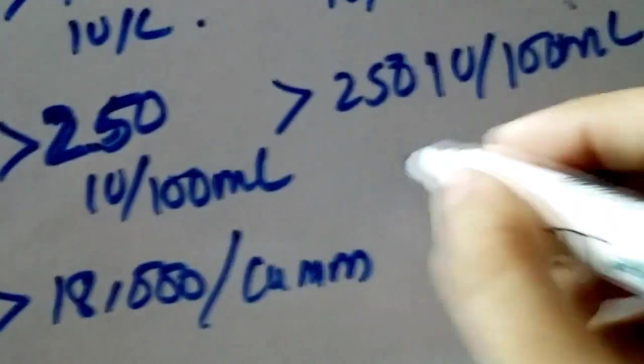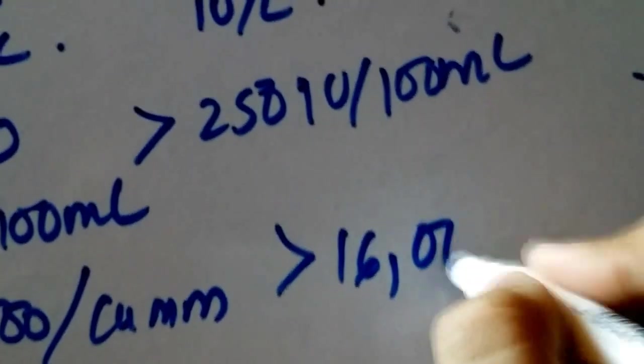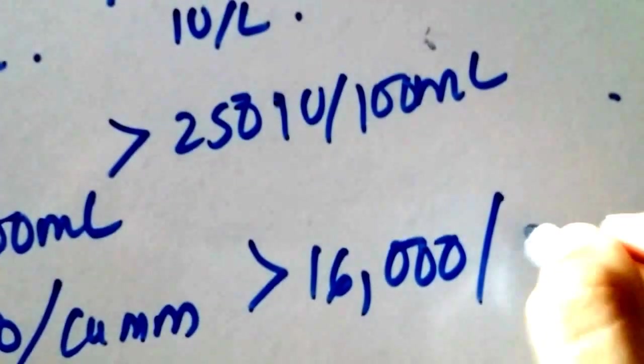And for non-gallstones, it's 2,000 less: 16,000 per cubic millimeters.